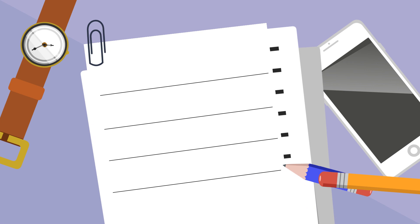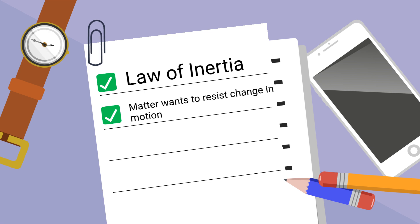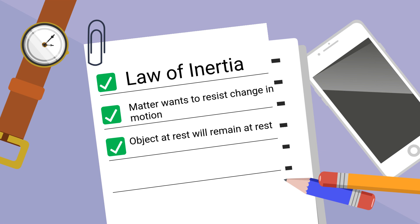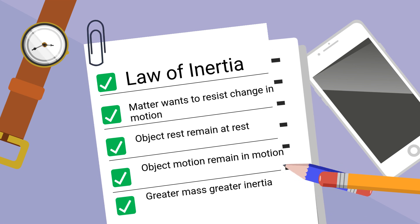Law number one states that matter wants to resist any change in motion. If an object is at rest, it wants to stay at rest. If an object is in motion, it wants to stay in motion. Also, the more mass an object has, the greater its inertia.